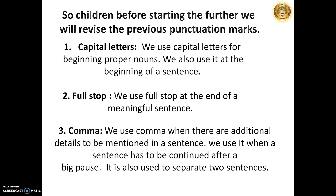Comma: we use a comma when there are additional details to be mentioned in a sentence. We use it when a sentence has to be continued after a big pause. It is also used to separate two sentences. For example, when we list items — orange, apple, banana — we say them continuously, but with commas we give a pause between each: apple, orange, banana, and so on.